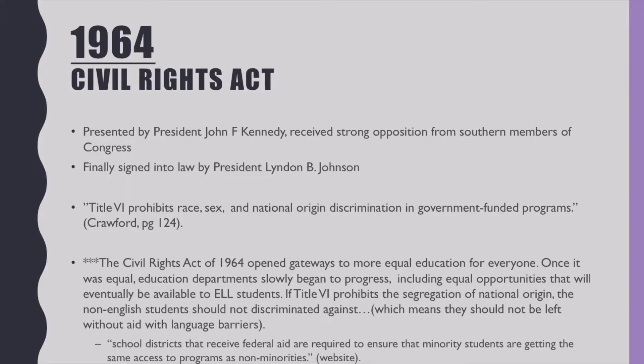Our next act is the Civil Rights Act of 1964. President JFK received strong opposition for this act from Southern members of Congress, but it was finally signed into law by President LBJ. Title VI of this act prohibited sex, race, and national origin discrimination in government-funded programs. The Civil Rights Act of 1964 opened gateways to more equal education for everyone, even though it didn't directly affect bilingualism. Once it was equal, the education department slowly began to progress, including equal opportunities that would eventually apply to ELL students.